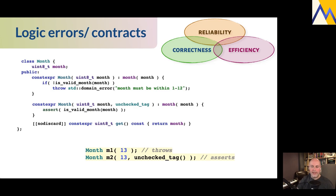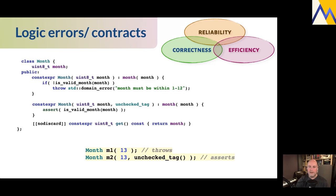We've actually got the intersection of three qualities here - correctness, reliability, and efficiency. By using the type system to enforce our contract, we have the opportunity to avoid that extra check, use the type system to enforce our contract, and do less work to be more efficient. An interesting three-way intersection.